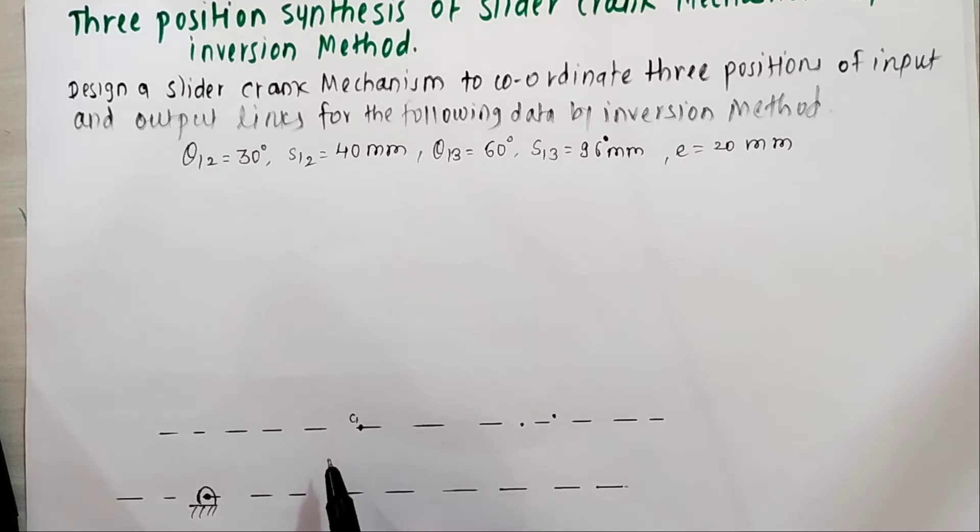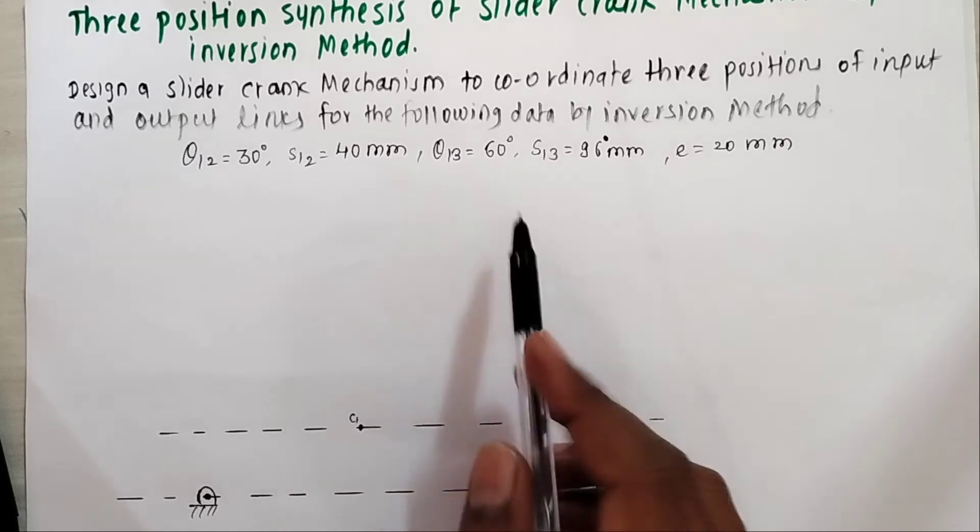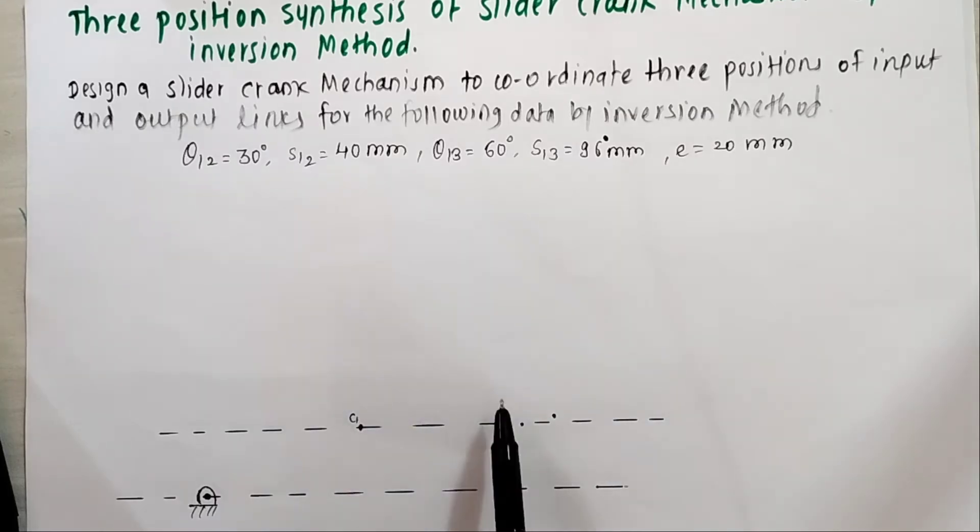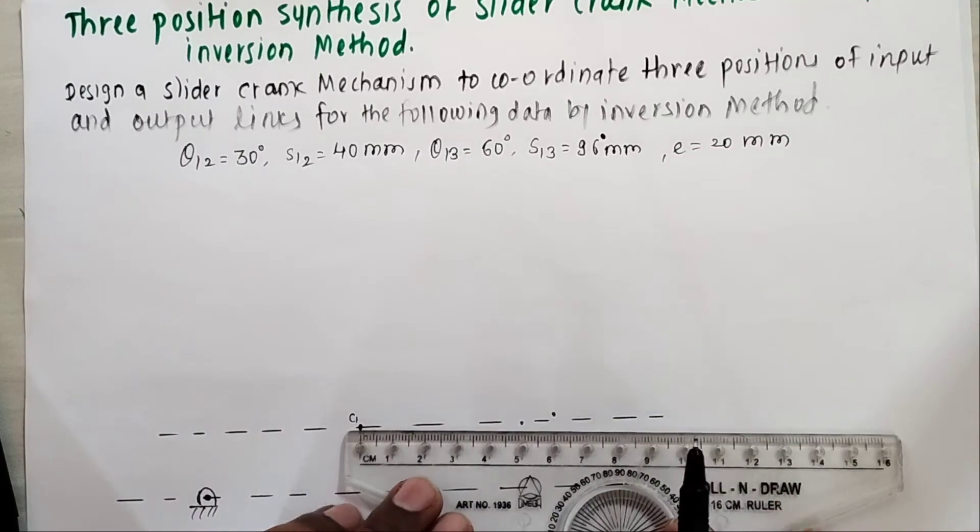After this I need to mark C2 and C3 on this second line such that C1C2 is S12 and C1C3 is S13. Mark points C2 and C3 by considering distances S12 and S13.